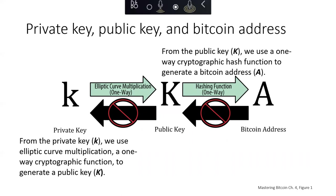A Bitcoin wallet contains a collection of key pairs, each consisting of a private key and a public key. The private key, shown as lowercase k, is a number usually picked at random. From the private key, we use elliptic curve multiplication — a one-way cryptographic function — to generate a public key K. From the public key, we then use a one-way cryptographic hash function to generate a Bitcoin address. Given a Bitcoin address, it's very difficult to compute the public key because hashing is one-way. And given the public key, it's very difficult to compute the private key because elliptic curve multiplication is also one-way.